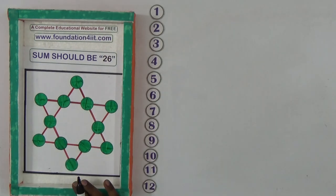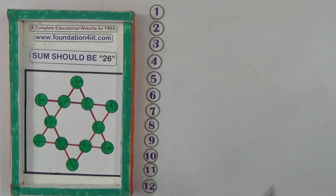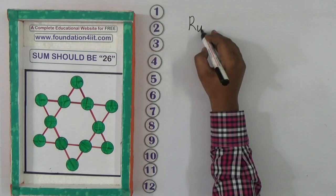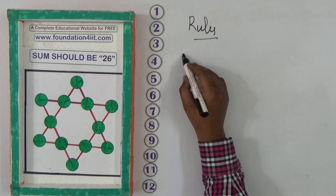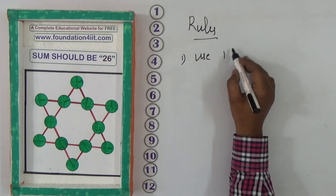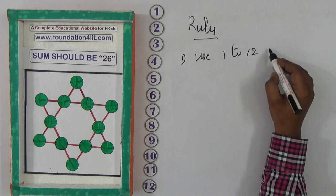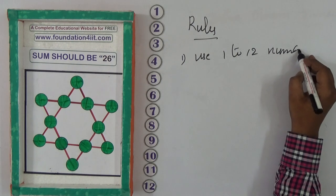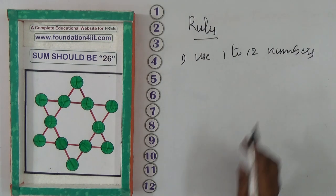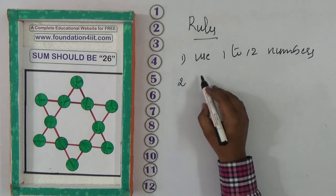Every straight line sum should be 26. If you observe the rules, use 1 to 12 numbers only. We need to use 1 to 12 numbers and the main rule is should not repeat.